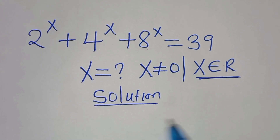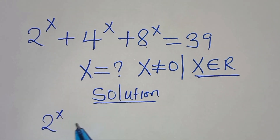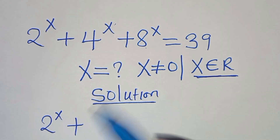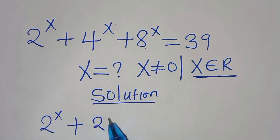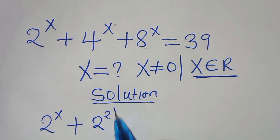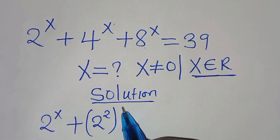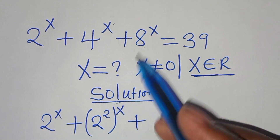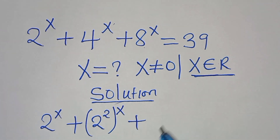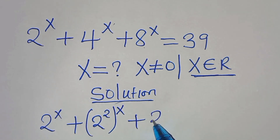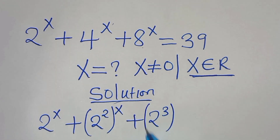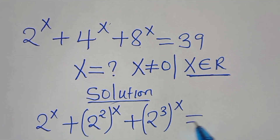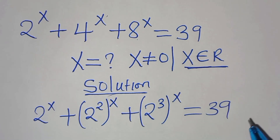We have 2 to the power of x plus 4 to the power of x. We can express 4 to the power of x as 2 to the power of 2, raised to the power of x. Then plus 8 to the power of x, which can be expressed as 2 to the power of 3, raised to the power of x. This is equal to 39.